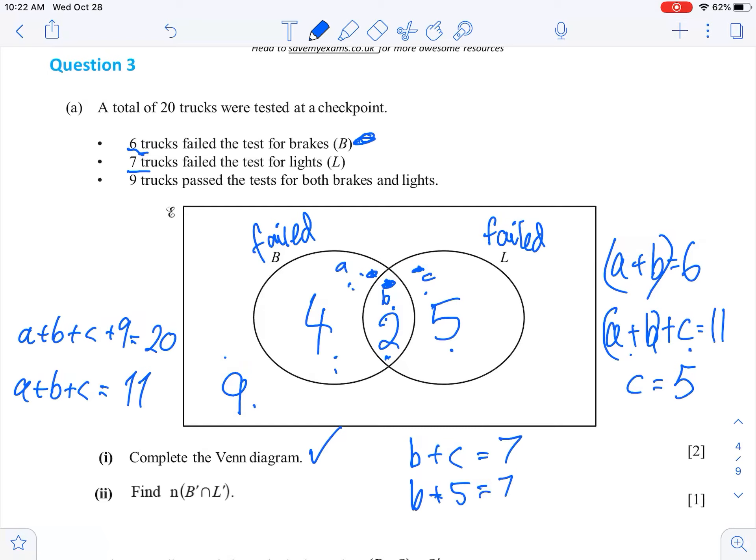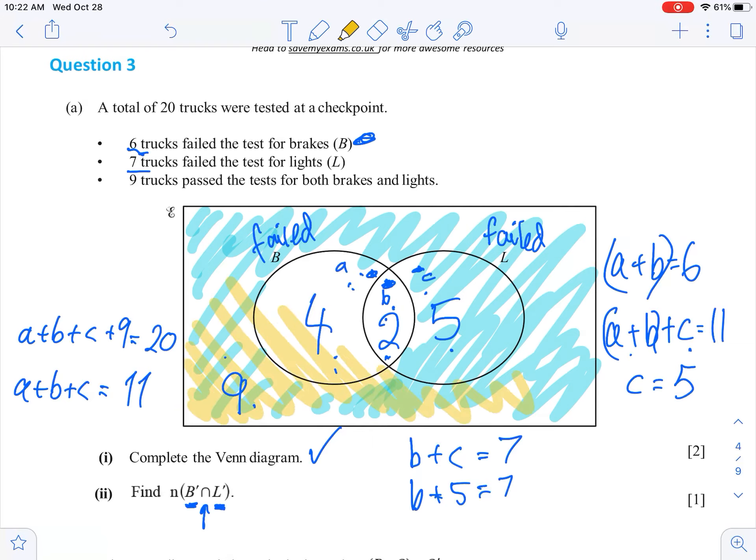Right now, find the number of elements in not B intersecting with not L. Well, not B, that's all of this, intersecting with not L. Well, that's all of the not L bit, all the outside there.